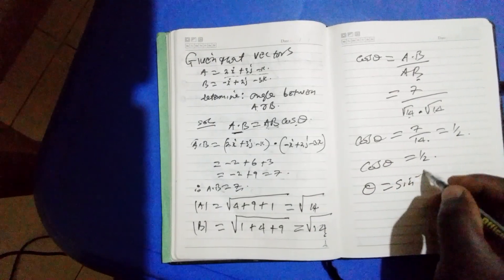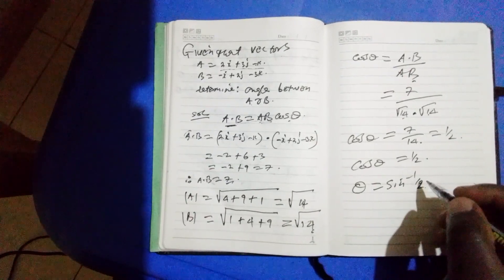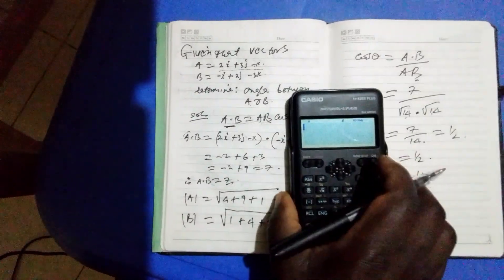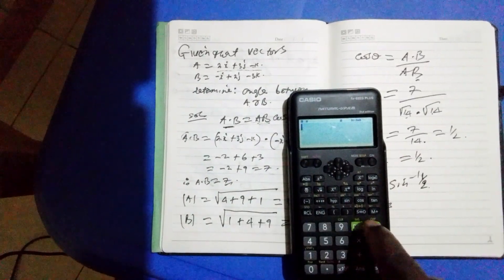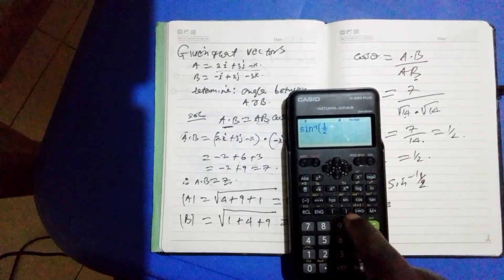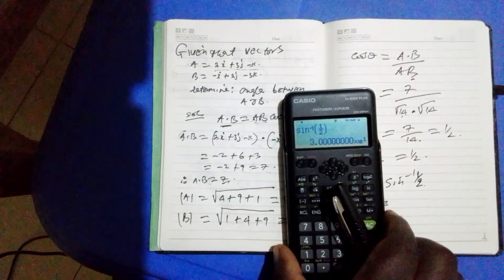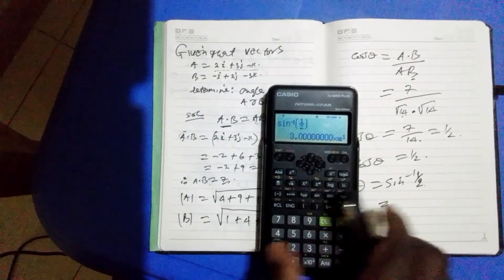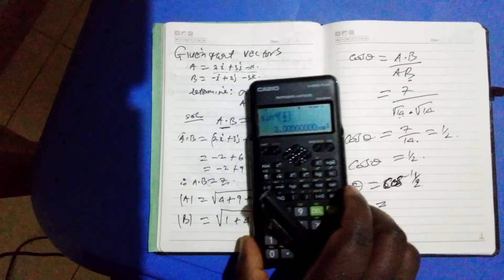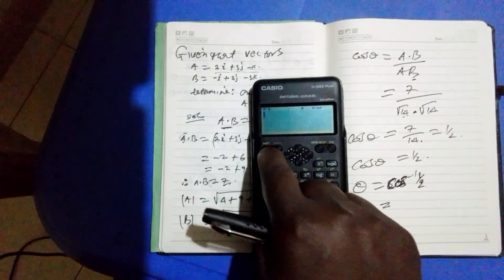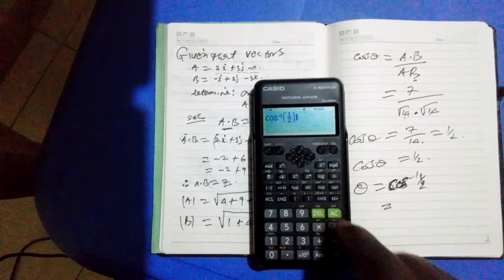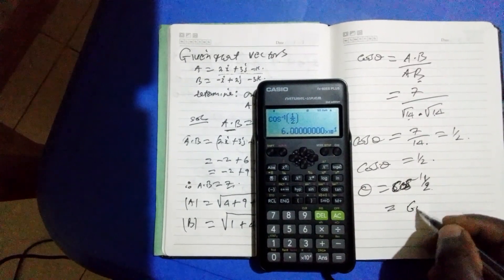Theta equals the inverse of a half. We can use our calculator. Not sine inverse, it's cos. Cos inverse of a half, which equals to 60 degrees.